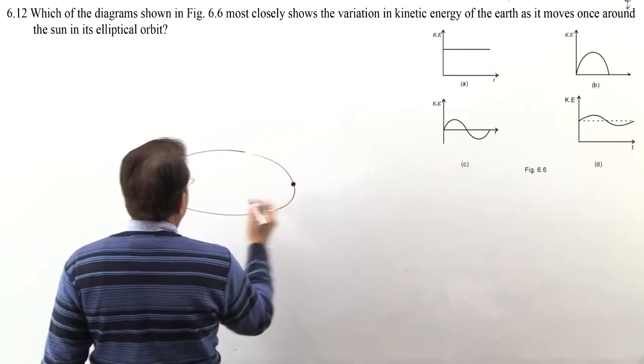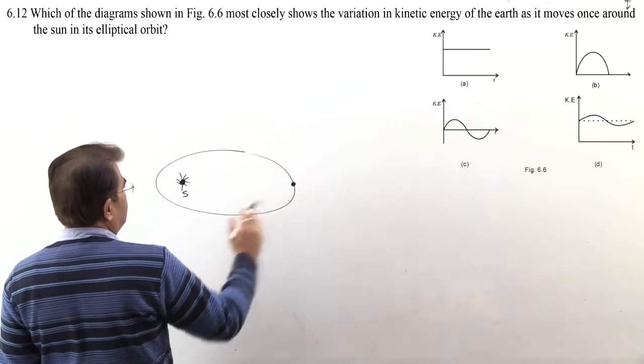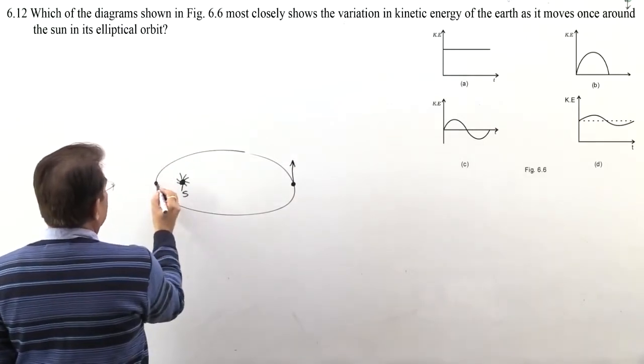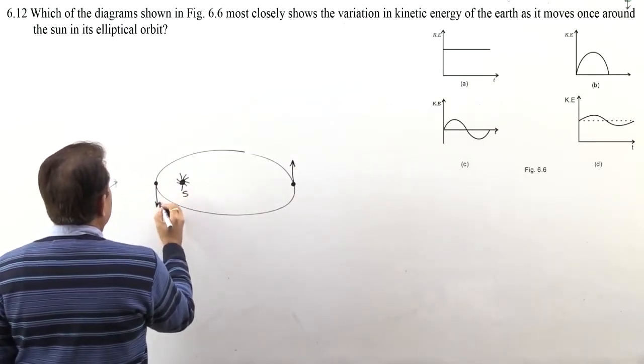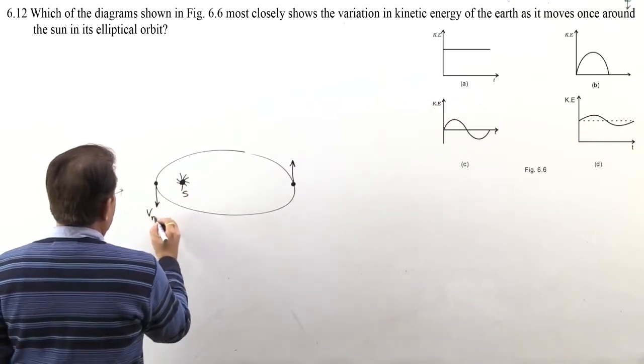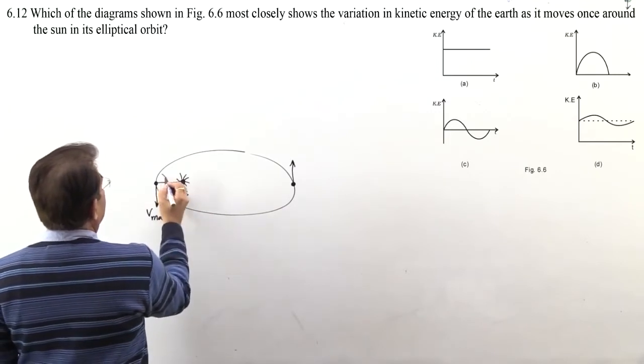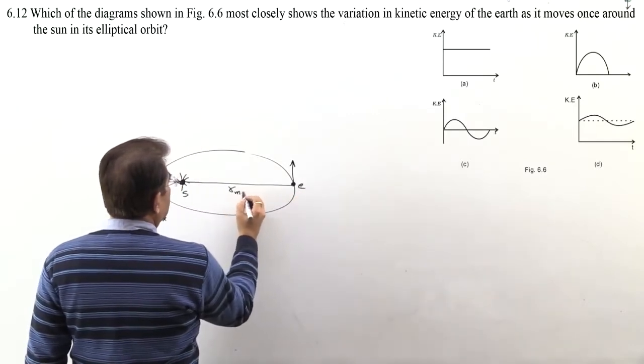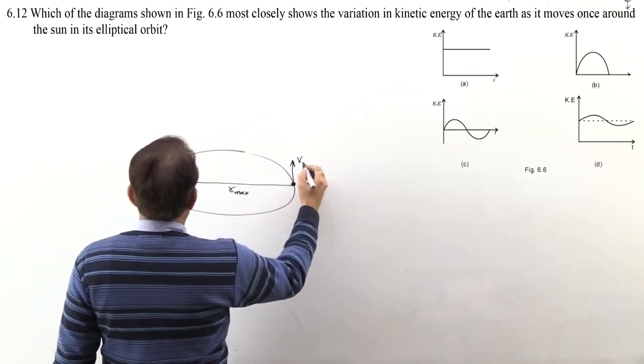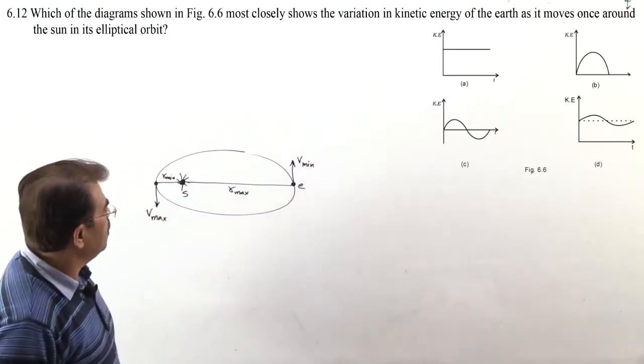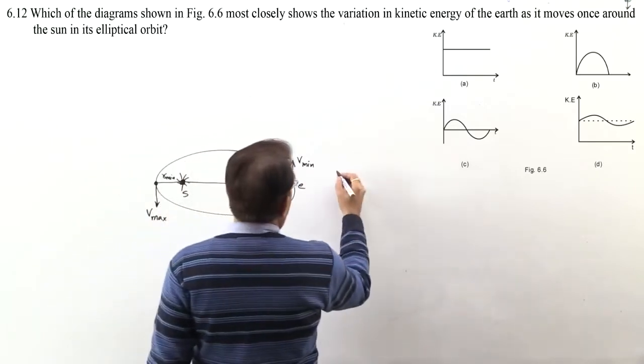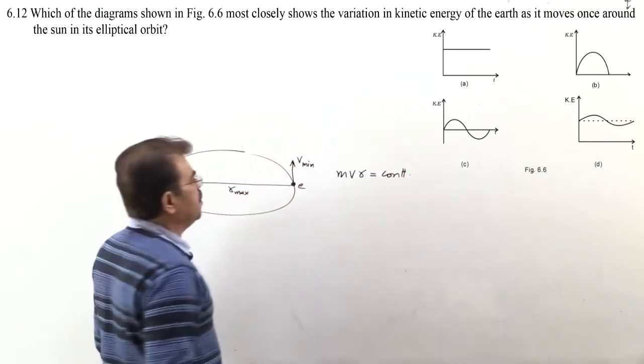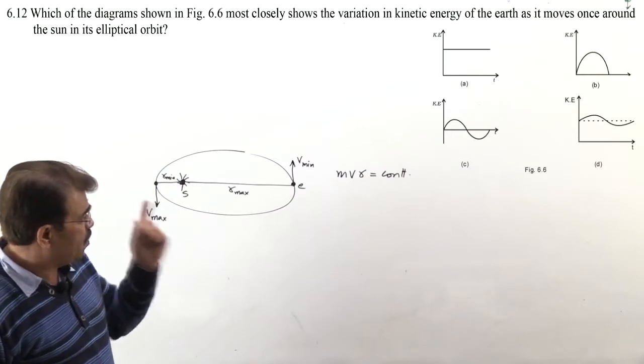So when Earth is farthest from sun, at that time Earth's velocity will be minimum. And when Earth is closest to sun, at that time Earth's velocity will be maximum. This will be maximum when this distance of Earth from sun is minimum. And when this distance of sun from Earth is maximum, at that time velocity will be minimum. That means velocity is not constant. And why? Because angular momentum mvr is constant. This is Kepler's second law. Angular momentum will be constant.